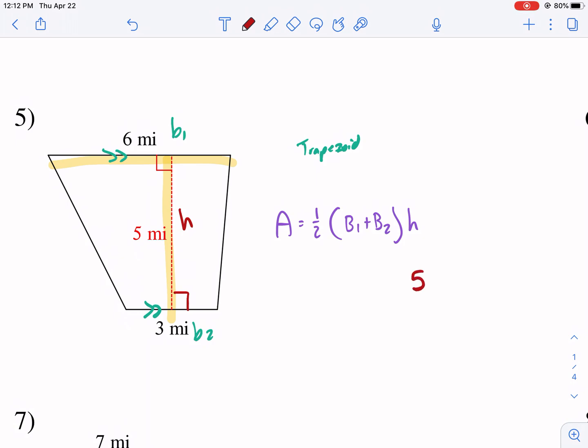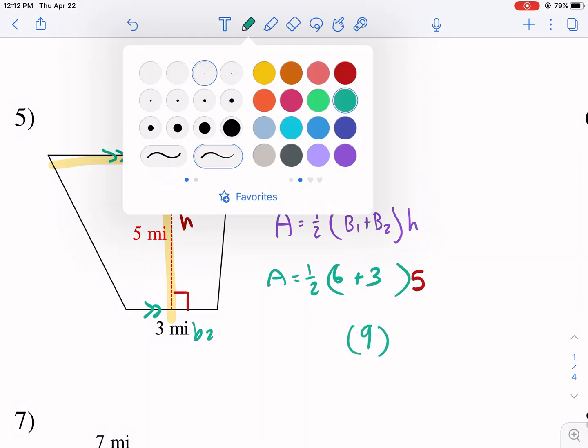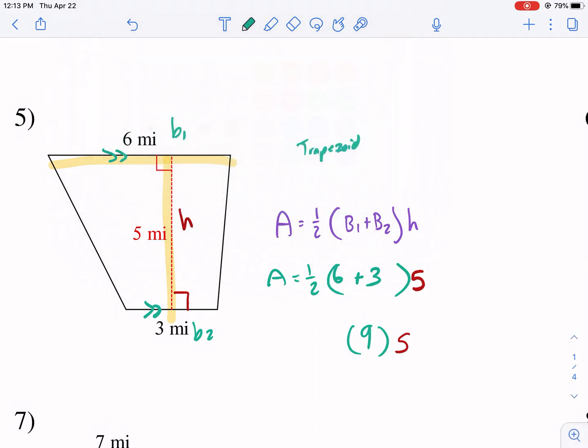So our height here is going to be 5. Our base 1 is going to be 6. Our base 2 is 3. Multiply that by 1 half. And that's equal to our area. Start with the parentheses. So we get 9 times the 5. And then we multiply that by 1 half.